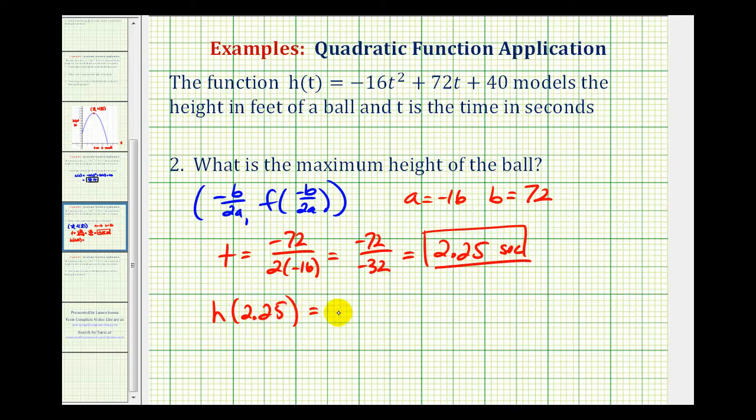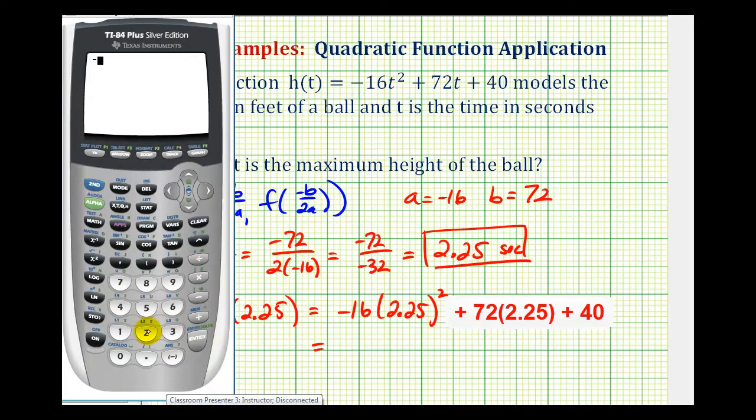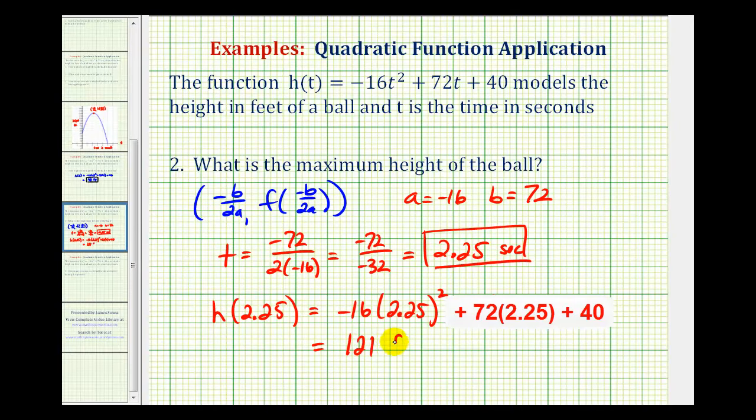So we'll have -16 times 2.25 squared plus 72 times 2.25 plus 40, and now we'll use the calculator. So we'll have -16 times 2.25 squared plus 72 times 2.25 plus 40. So the maximum height is 121 feet, which is the answer we're looking for.